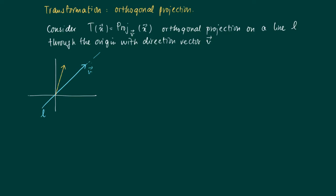So take a vector x and we form the orthogonal projection on v.